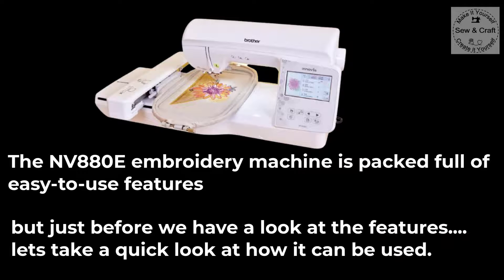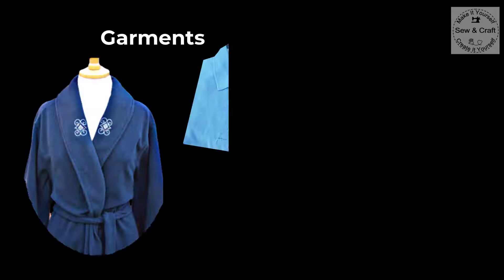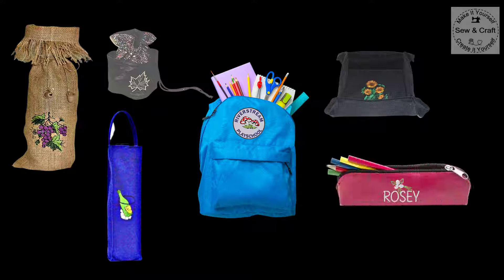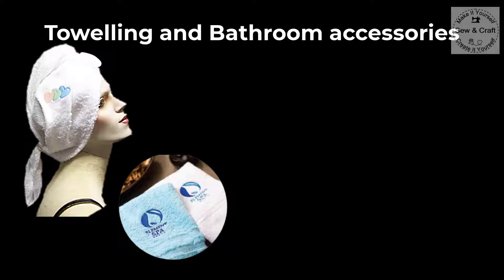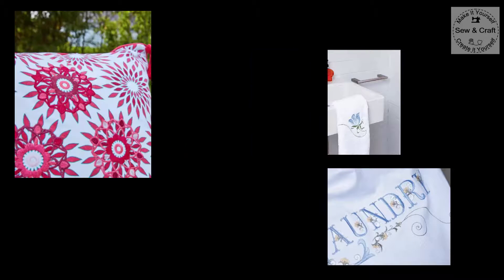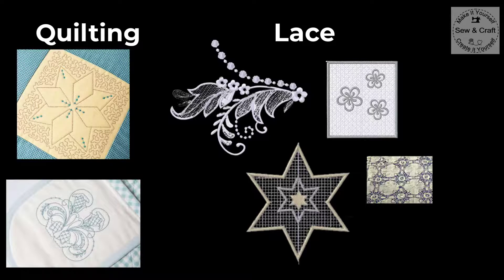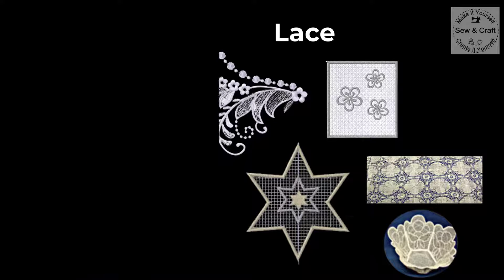This embroidery machine is packed full of easy to use features, but before we look at the features let's see how it can be used. Embroider on garments, caps and hats, aprons and bags, personalized gifts and a range of other useful items. Embroider on towels and bathroom accessories, create cushions and decor, embroider photographs, use it for quilting and creating lace, make badges and patches and much more.